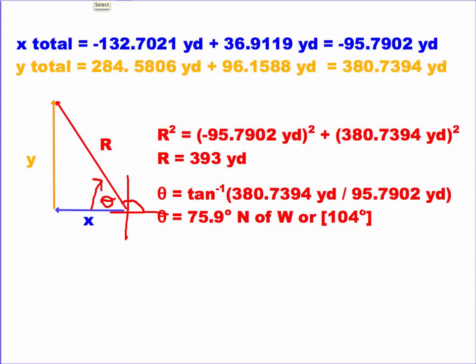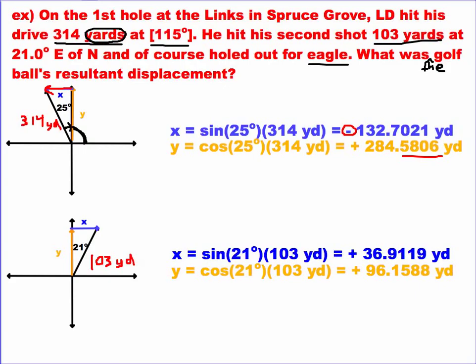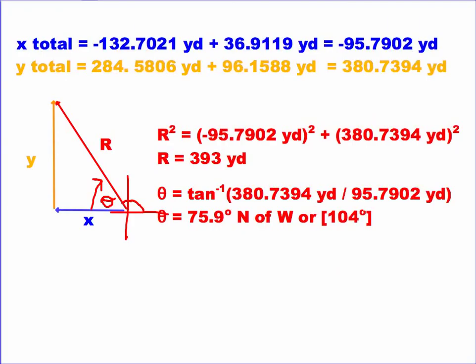So those steps, again, you want to draw out your two vectors. You want to break them into x and y components. Make sure that if the x component or the y component is going left or down, you make it a negative. Then take your two x's and add them together. And take your two y's and add them together. And then you've just got a simple right-angled triangle problem where you can figure out the resultant using the Pythagorean formula and you can figure out the angle using tangent. So I hope that helped. If you're looking for more questions on adding non-right-angle vectors, check out my website at ldindustries.ca.